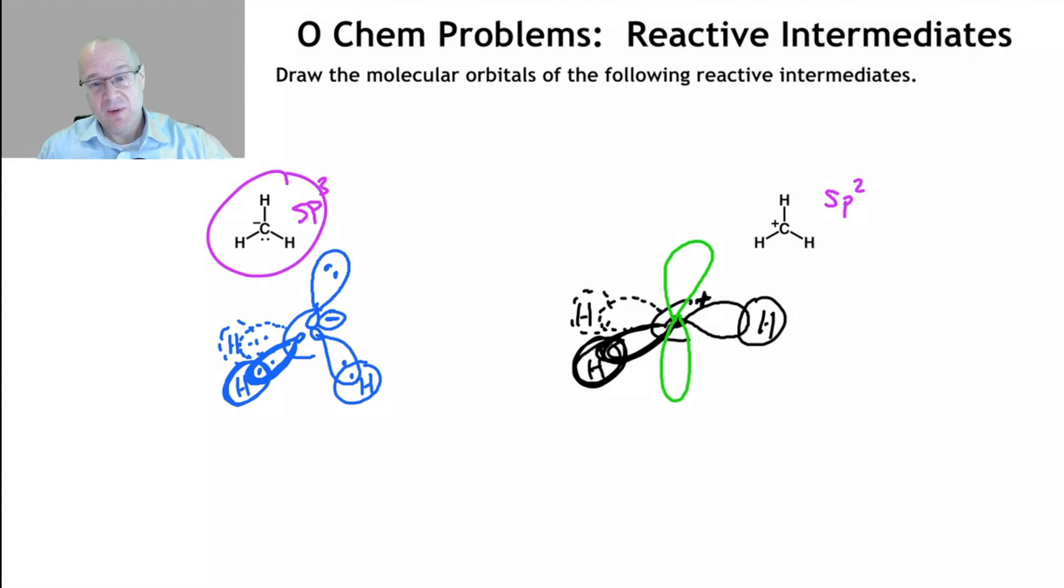Carbocations are always sp2, are trigonal planar, and they have an unoccupied p orbital. So carbanions are tetrahedral, typically. Carbocations are trigonal planar. And that's going to become very important as we move into other units of this class and start talking about reactivity and outcomes of reactions.